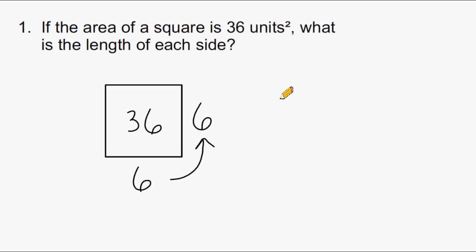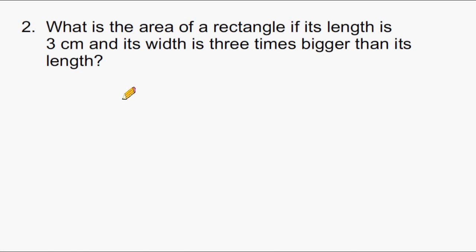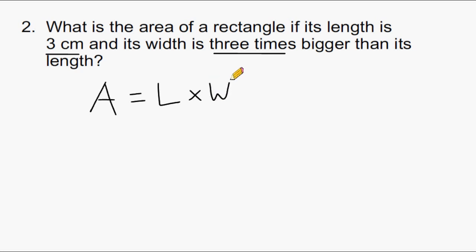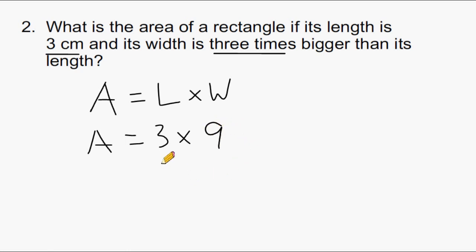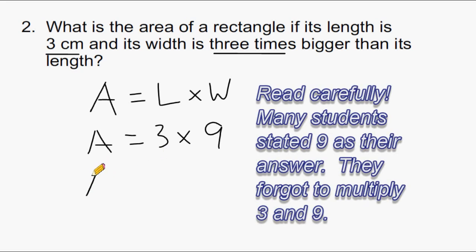Now for the next problem. This problem asks: what is the area of a rectangle if its length is 3 cm and its width is 3 times bigger than its length? The area of a rectangle is found by multiplying its length by its width. The length is 3 cm, and the width must be 9 cm, because 9 is 3 times bigger than 3. So the area of this rectangle is 27 square centimeters.